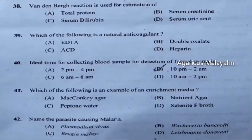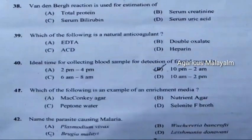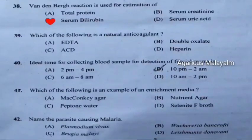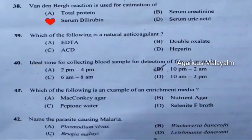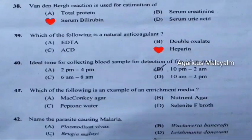Question 38: Van den Bergh reaction is used for the estimation of — correct answer is option C, serum bilirubin. Question 39: Which of the following is a natural anticoagulant? Correct answer is option D, heparin.